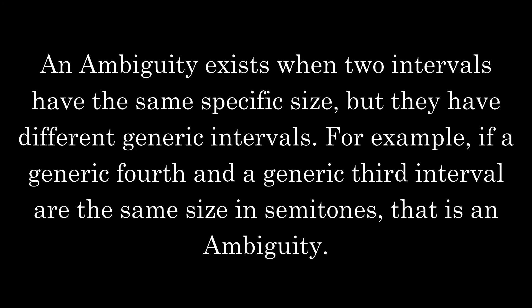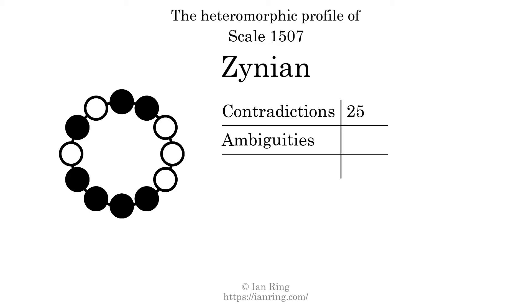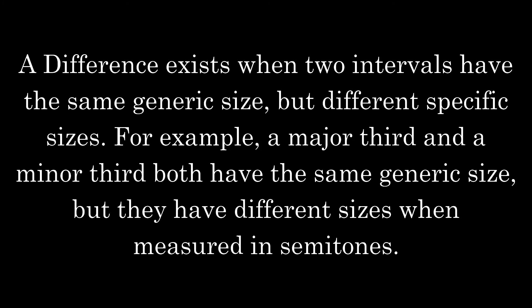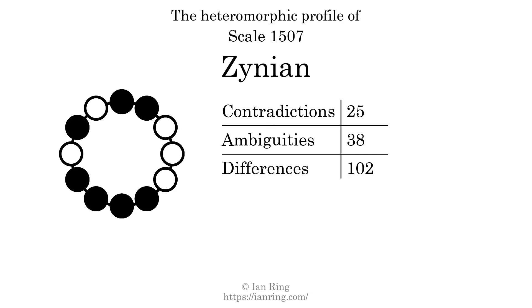An ambiguity exists when two intervals have the same specific size, but they have different generic intervals. For example, if a generic 4th and a generic 3rd interval are the same size in semitones, that is an ambiguity. The number of ambiguities in this scale is 38. A difference exists when two intervals have the same generic size but different specific sizes. For example, a major 3rd and a minor 3rd both have the same generic size, but different sizes in semitones. The number of differences in this scale is 102.